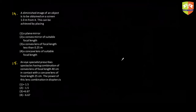Question 14: A diminished image of an object is to be obtained on a screen one meter from it. This can be achieved by placing a convex lens of focal length less than 0.25 meter. Since the image is formed on the screen, it has to be a real image. A plane mirror creates a virtual image, a convex mirror also forms a virtual image, and a concave lens creates a virtual image — so none of those can project onto a screen. Therefore, only option three (convex lens) is correct.